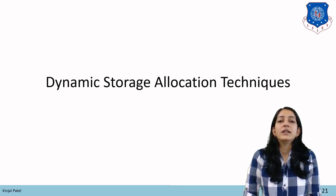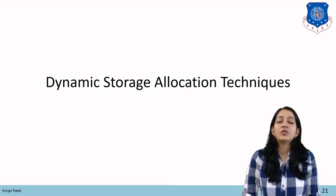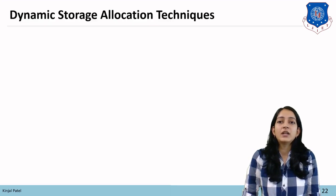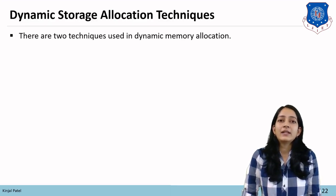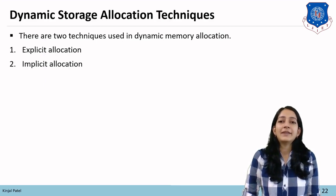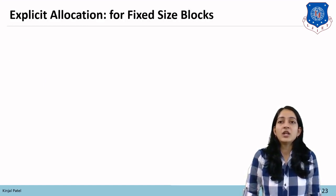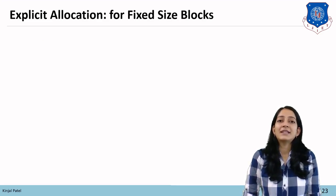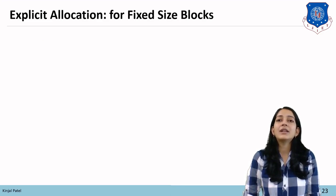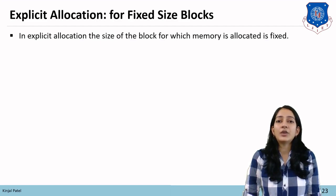The next topic is dynamic storage allocation techniques. There are two techniques used in dynamic memory allocation: explicit allocation and implicit allocation. In explicit allocation, the size of the block for which memory is allocated is fixed.